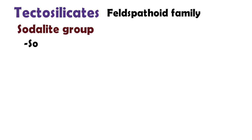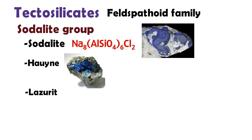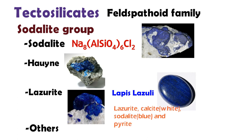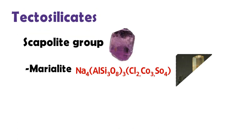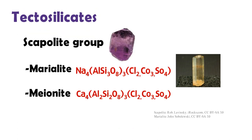The sodalite group belongs to the feldspathoid family. This group has sodalite, hauyne, lazurite, and opal. Especially, lapis lazuli is a mixture of lazurite (blue), calcite (white), sodalite (blue), and pyrite (metallic yellow). The scapolite group includes marialite and meionite.